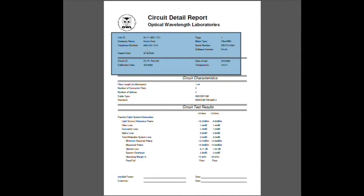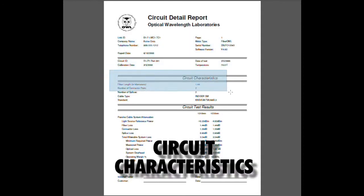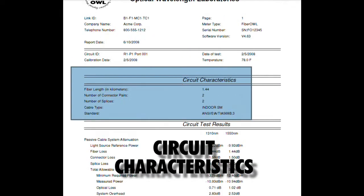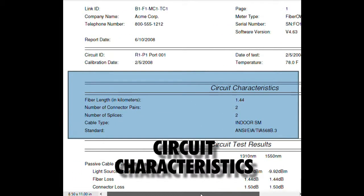Below this general information is circuit characteristics. Circuit characteristics show what the parameters were when we entered information into the link wizard. This information is critical for calculating a link budget.